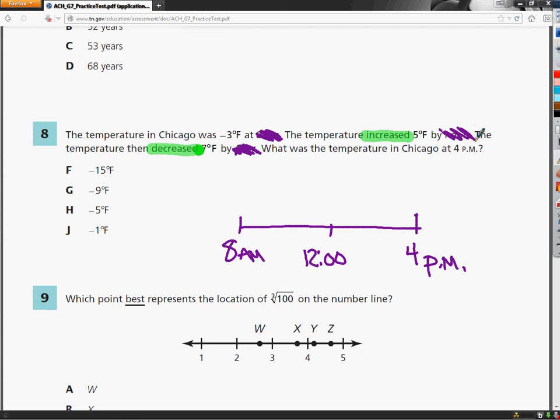And they want to know what the temperature is at 4pm. So I'm going to make an arrow to remind myself that's the one I'm looking for. And just leave the rest alone. Now, it was at 8 o'clock, negative 3 degrees Fahrenheit. So I'm going to make a statement that says negative 3 degrees Fahrenheit. Between those hours,